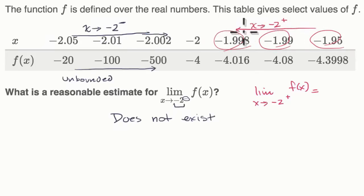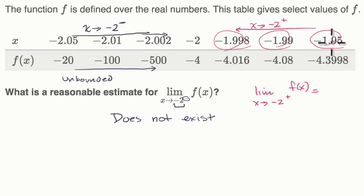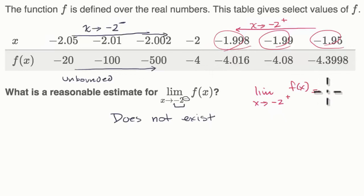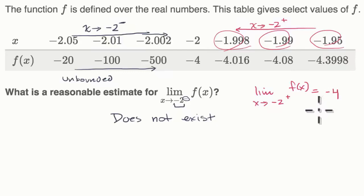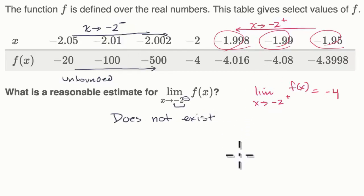Remember, when you're looking at a limit, sometimes it might be distracting to look at the actual value of the function at that point. You want to think about what the value of the function is approaching as x approaches that value. As x is getting closer and closer to negative 2 from the right — from values larger than negative 2 — it looks like f of x is getting closer and closer to negative 4, which is f of negative 2. That seems like a reasonable estimate. In general, if you are approaching different values from the left than from the right, then the limit of your function does not exist at that point.